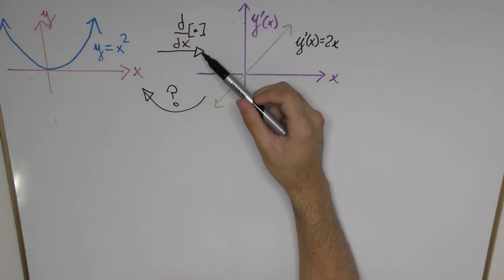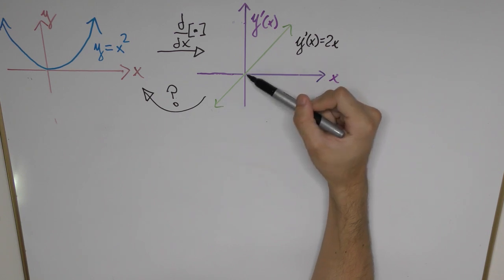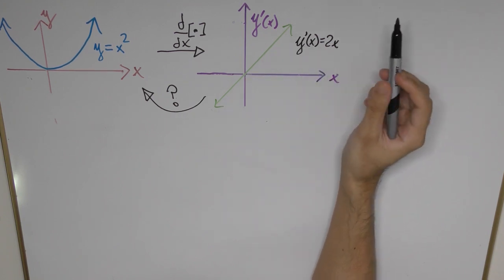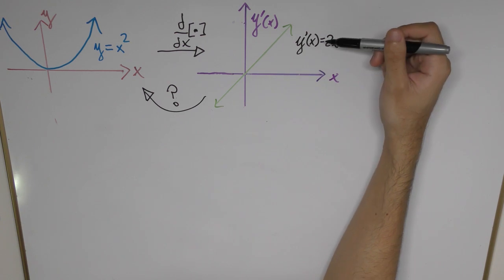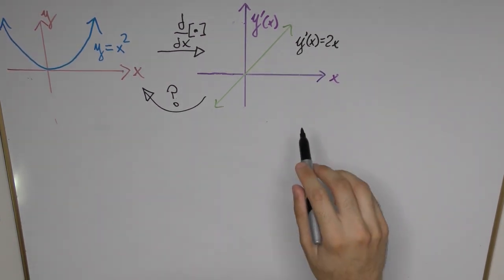So here by applying the derivative operator to the function y equals 2x squared we obtain a straight line that goes negative, passes through the origin and then goes positive. So we define the derivative of y as y prime of x and it is equal to 2x in this case.